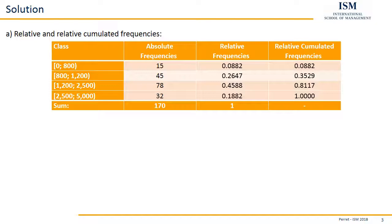This is, as I said, the second possibility to check whether you did everything wrong or right up to this point. Because here in the end it always needs to be one. So in the end, if you did the second column correctly, in the third column the end result, the last relative accumulated frequency, also always needs to be one.